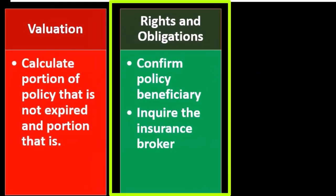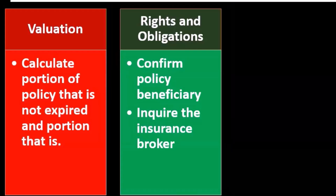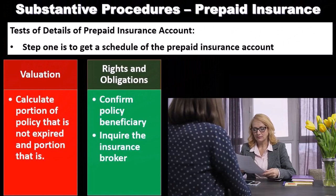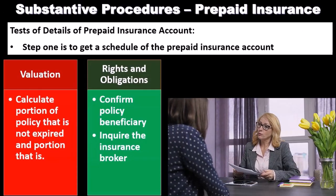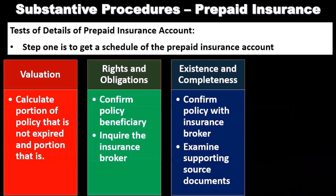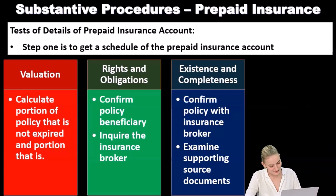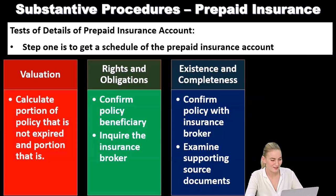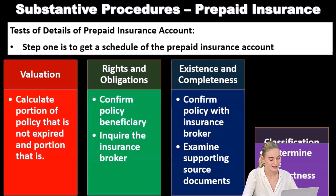For the rights and obligations assertion, we confirm the policy beneficiary and inquire of the insurance broker. Talking to the insurance broker is useful because they are outside the organization, which gives us better, more independent evidence. For existence and completeness, we confirm the policy with the insurance broker and examine supporting source documents.